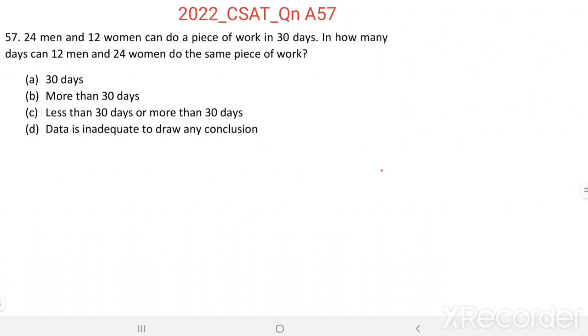Question number 57: 24 men and 12 women can do a piece of work in 30 days. In how many days can 12 men and 24 women do the same piece of work? So 24 men and 12 women can complete a piece of work in 30 days. Then how many days will it take 12 men and 24 women to finish the same work?